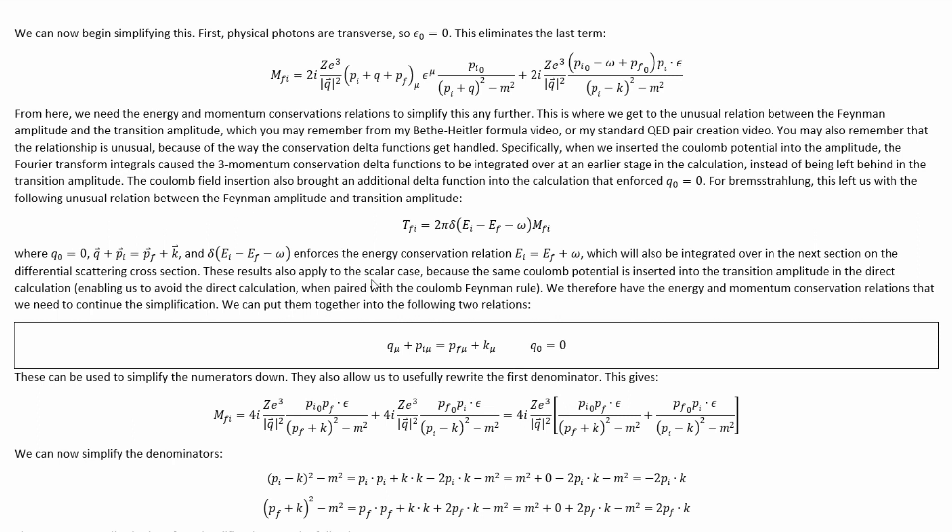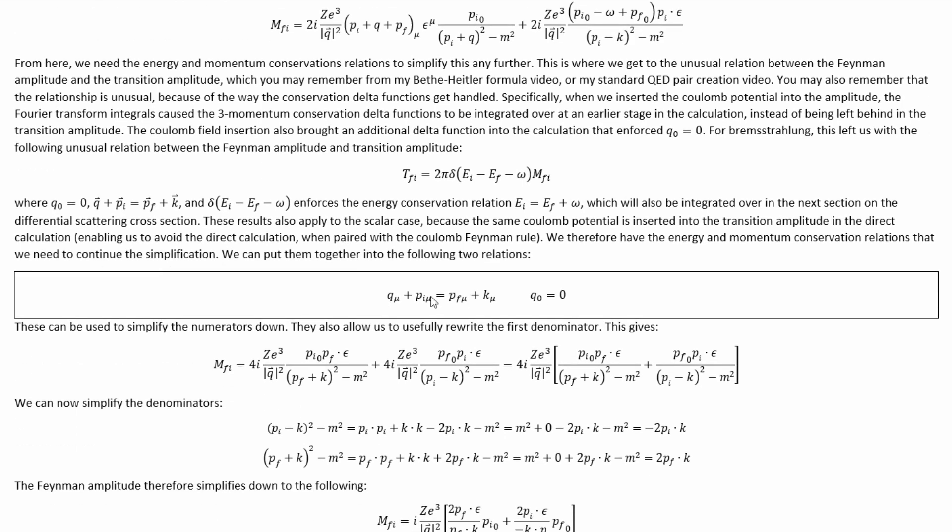These results also apply to the scalar case because the same Coulomb potential is inserted into the transition amplitude in the direct calculation, enabling us to avoid the direct calculation when paired with the Feynman rule that I already gave for a Coulomb virtual photon. We therefore have the energy and momentum conservation relations that we need in order to continue the simplification. We can put them together into these two relations.